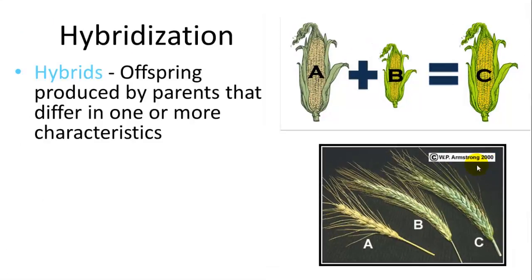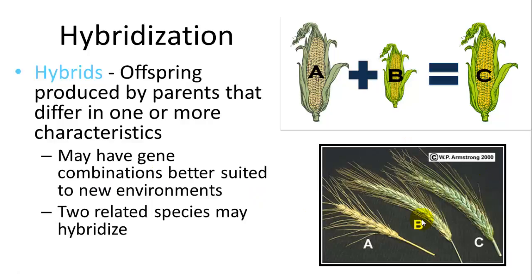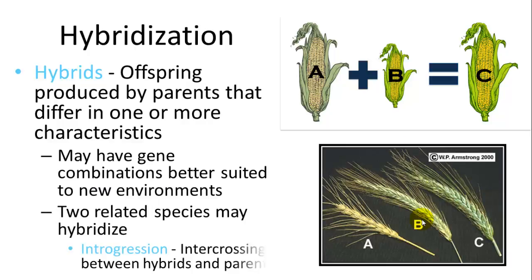Hybridization is where two different species form a new offspring — whether that offspring is viable depends on many things including chromosome number. Hybrids may have gene combinations better suited to conditions. Introgression is the intercrossing between hybrids and their parents, which may also create new species.